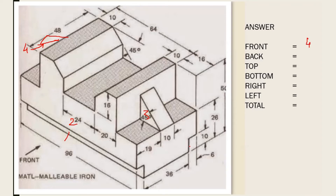From the back: this one is one, then the upper part full is two, then this part is three, then this slanting one on the left side is four. So four back surfaces. Then the right surfaces — right and the left are symmetry. Let's calculate the right surfaces: one, two, three. The right surfaces are three surfaces.